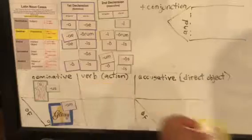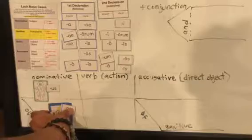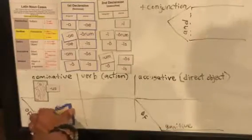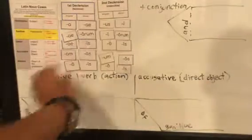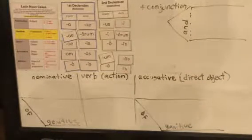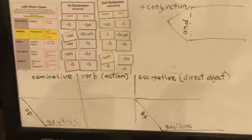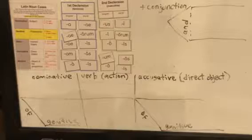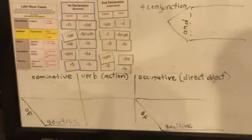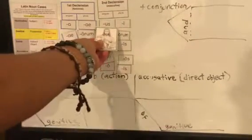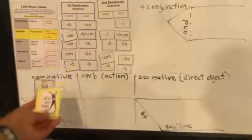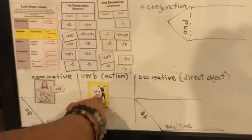Let's put everything back — genitive, singular, verb back, accusative, singular, glory back, singular, second declension, nominative. Number six: Christ praises the friends of Mary. Your subject is Christ — second declension, singular — Christus. Praises — we know that's laudat, singular. Christus laudat.